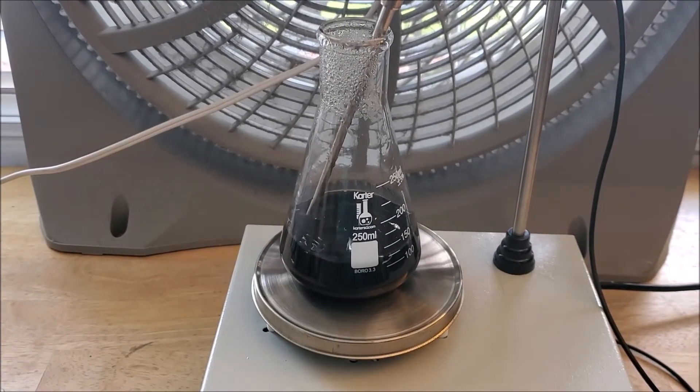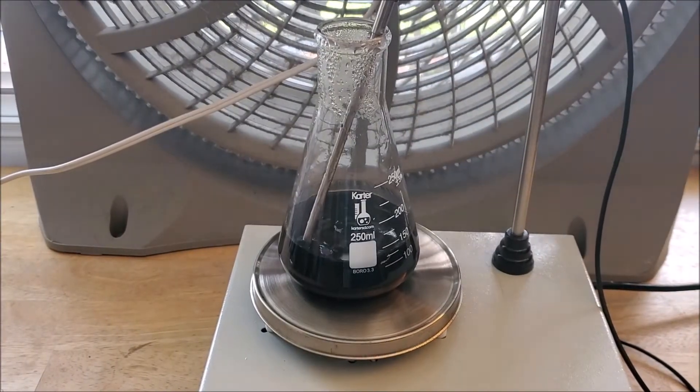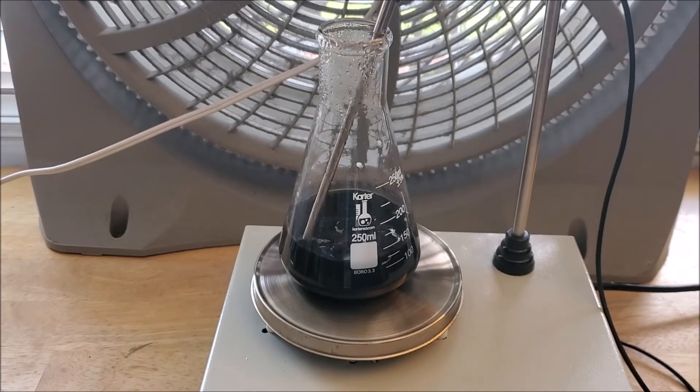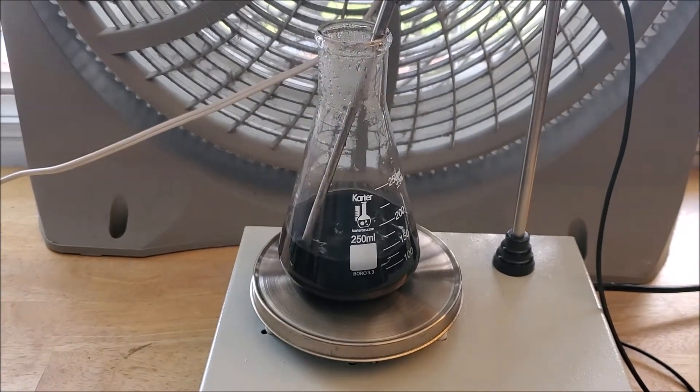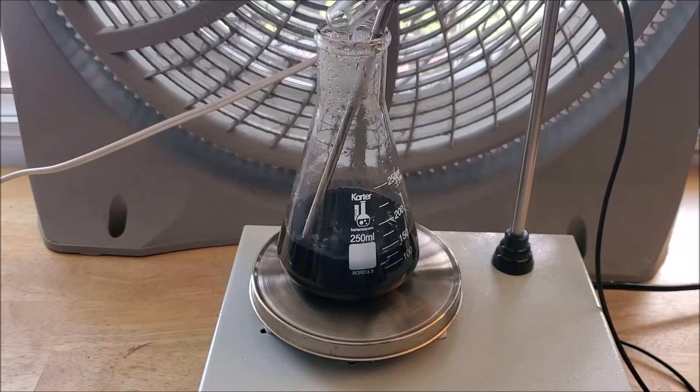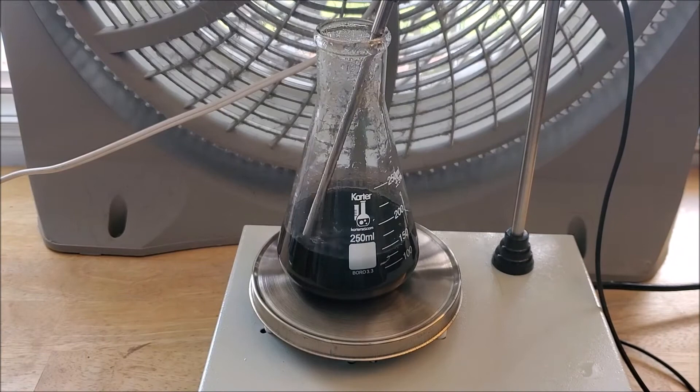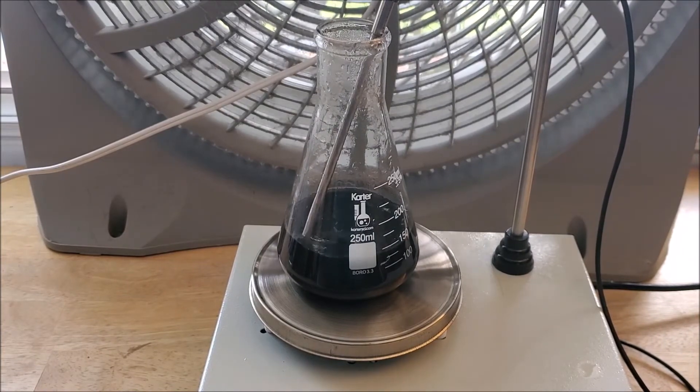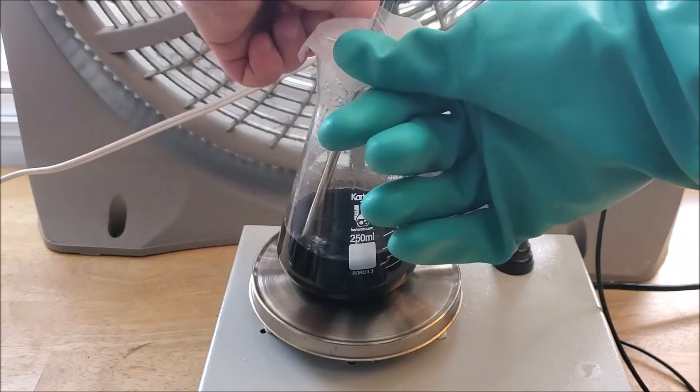After that, we heat the solution to around 80 to 90 C. We have to let it stay at 80 to 90 C for the next 90 minutes. And here you can see I finished by adding my 6 milliliters of acetyl acetone and that finishes this step. Now I cover it with a little bit of parafilm and we wait 90 minutes.